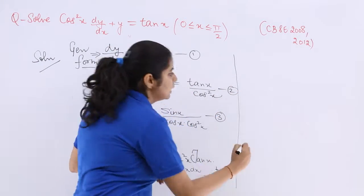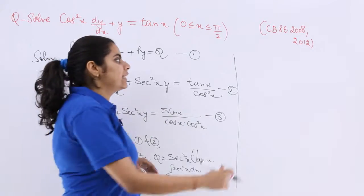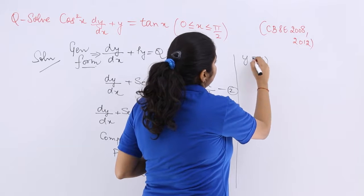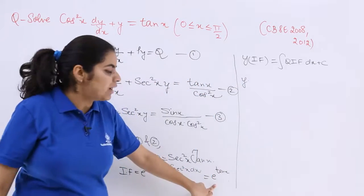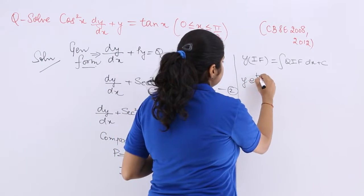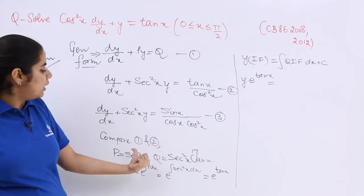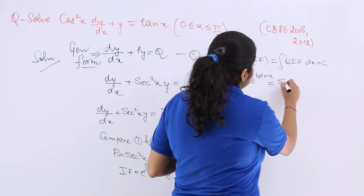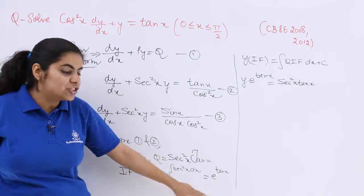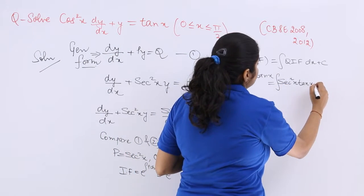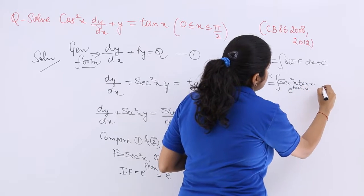The next step is to multiply the whole equation by the integrating factor. The solution formula gives y · (integrating factor) = ∫Q · (integrating factor) dx + C. So y · e^(tan x) = ∫sec²x · tan x · e^(tan x) dx + C.